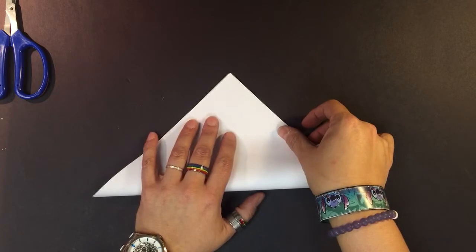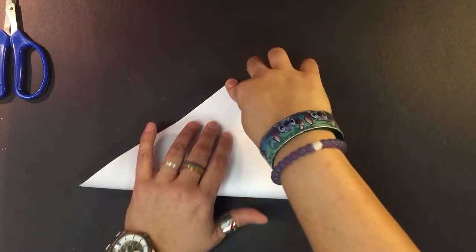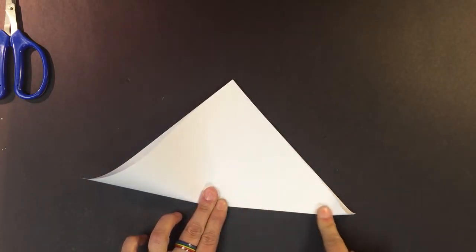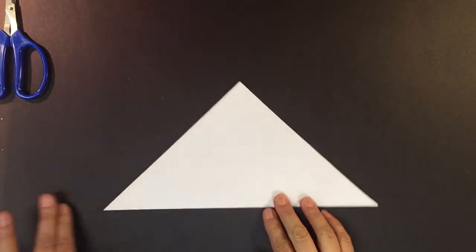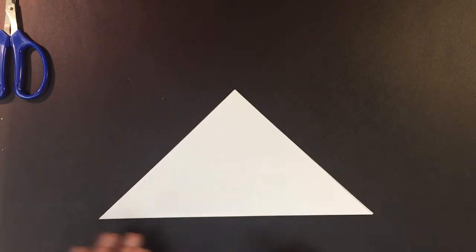Match your corner. Don't squish down right away. Make sure your corners match, hold it, slide your hand down, and then do side to side so you get a nice flat crease. Creases are very important in origami.